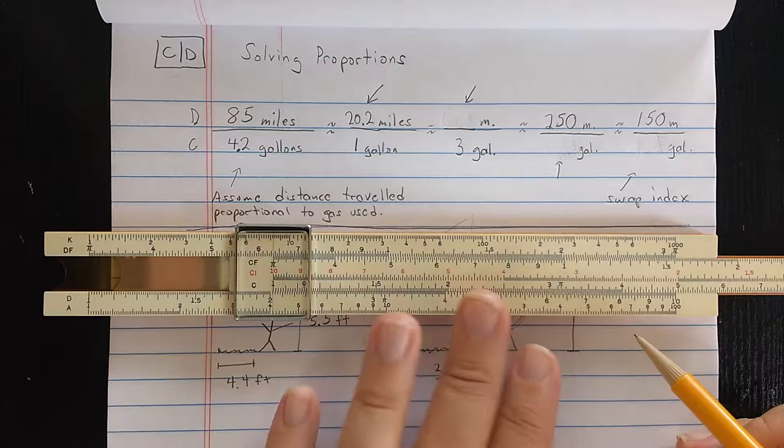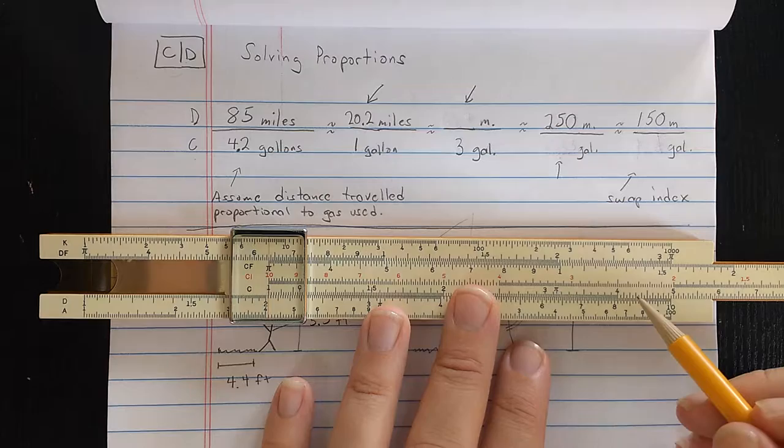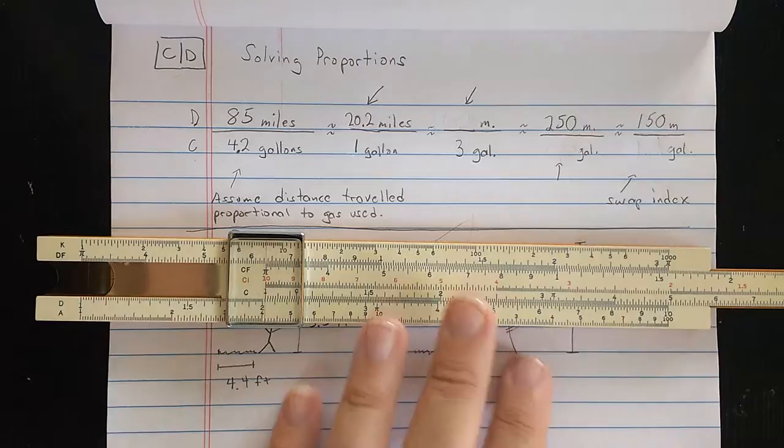So I've computed the number of miles per gallon my car has used. And notice that was actually the same procedure we used in the previous video for division. I found 8.5 on D, aligned it with the second number on C, came out to the index, and then read the result on D.